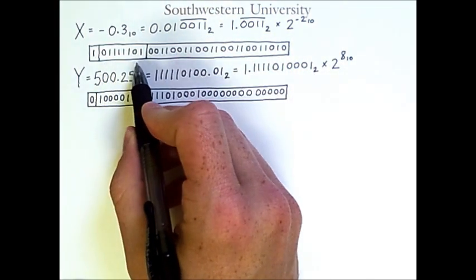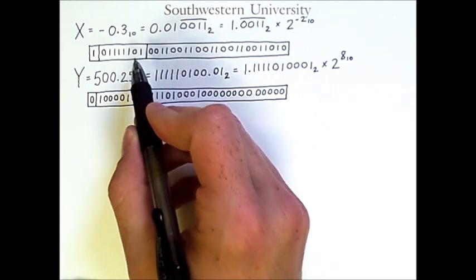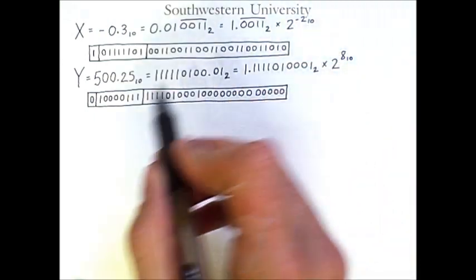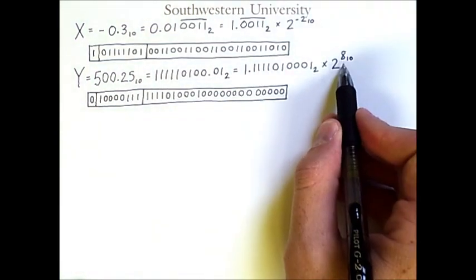So this value, which is 125, is minus 2 plus 127. Similarly, this value, which is 135, is 8 plus 127.